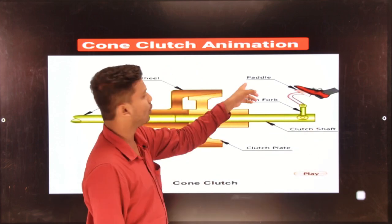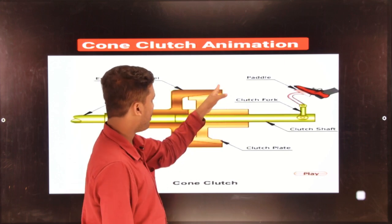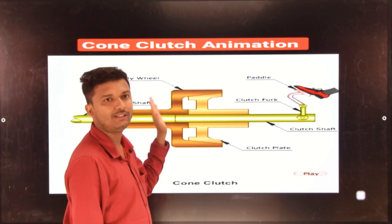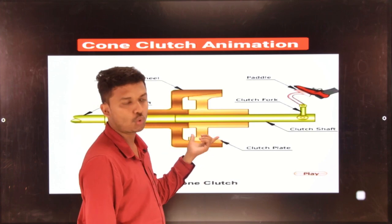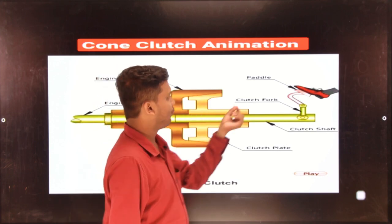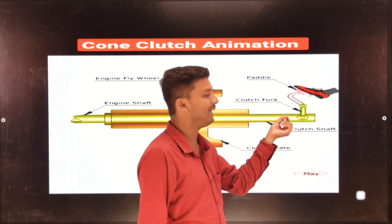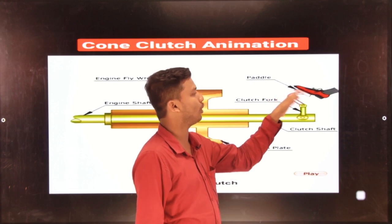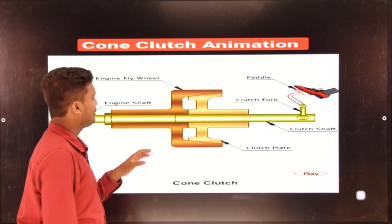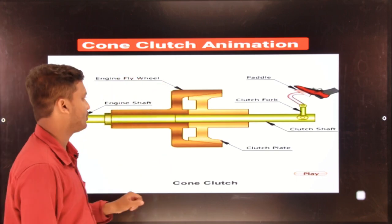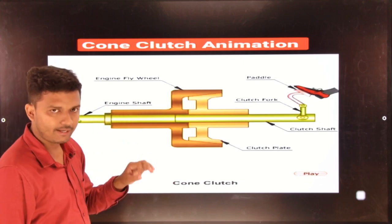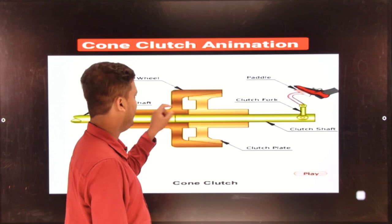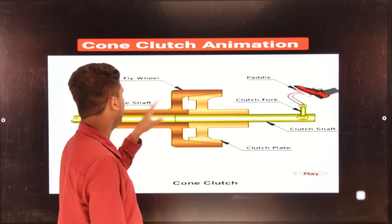This is the inner cone system — male part — and the outer cone system is the female part, connected to the engine flywheel. This is the inner cone clutch plate. The clutch fork is the arrangement by means of a fulcrum within the clutch, connected to the clutch pedal outside. The outer female part is connected to the flywheel.